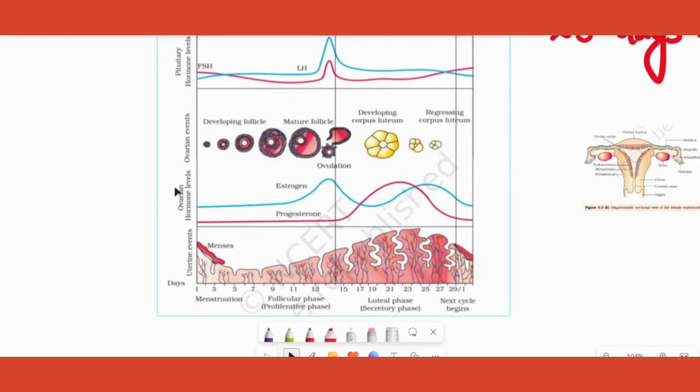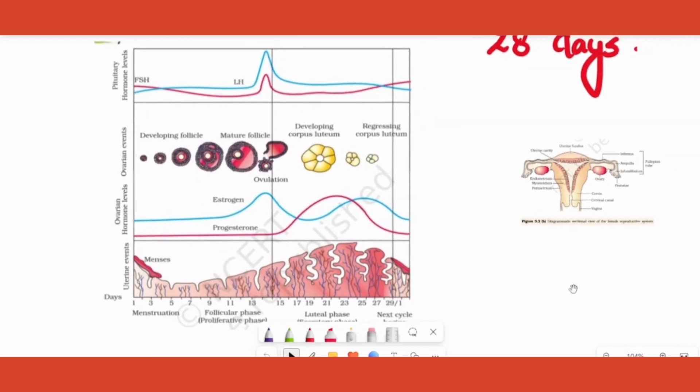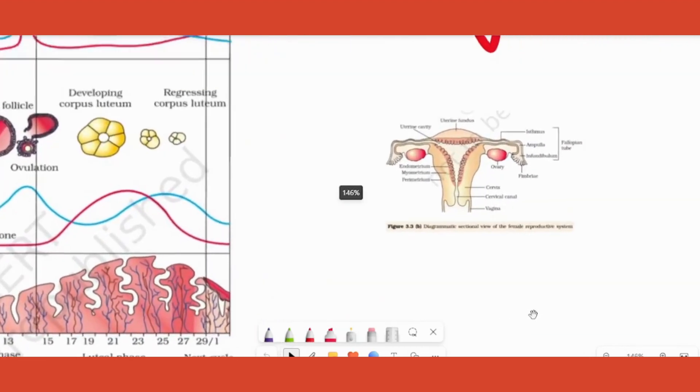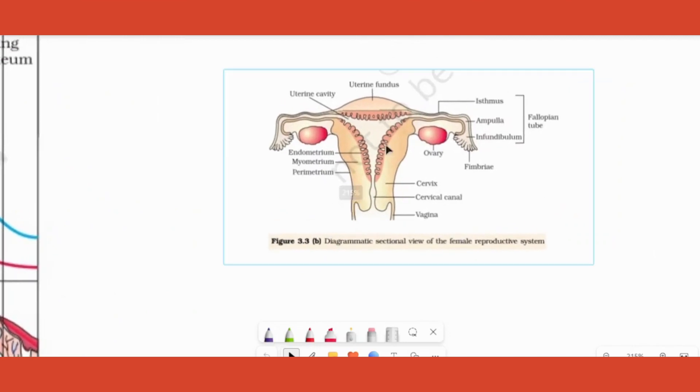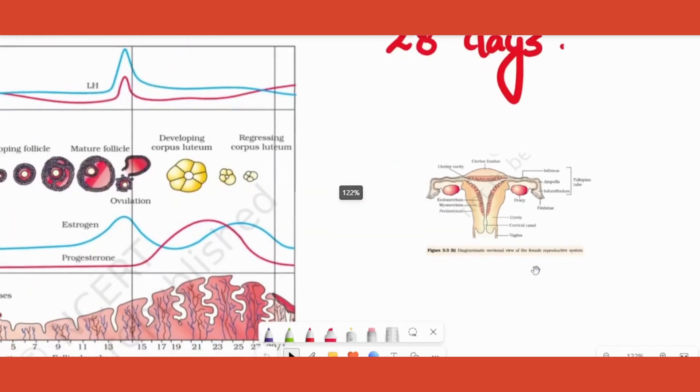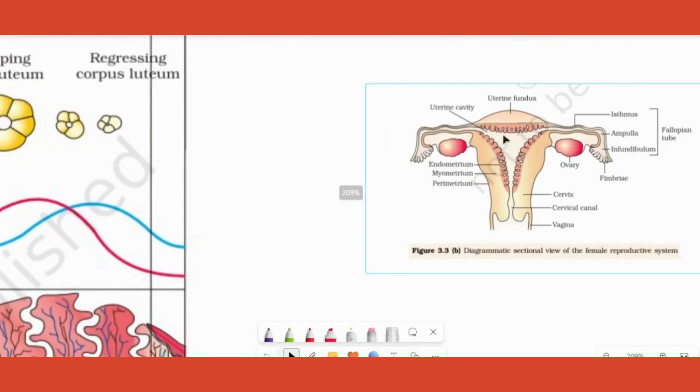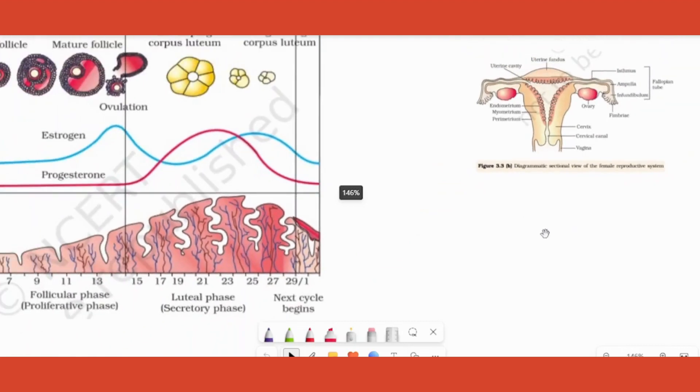What does that mean and what hormones are involved in it? First and foremost will be what are the events. When we say events, certain changes are happening in the ovary also, in the lining of uterus also. I hope you remember the name of the innermost lining of uterus and it is endometrium.